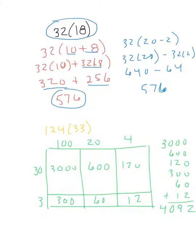Now for me personally, I actually think it's easier to not do it as 10 plus 8 is 18, but to actually do it as 20 minus 2. Because 32 20s, well, I just double 32, that's 64. So 32 20s is 640. 32 2s is 64. 640 minus 64 is 580. 580 minus 4 is 576.